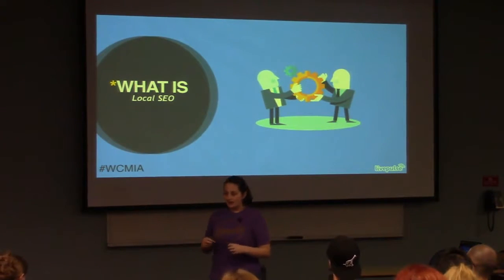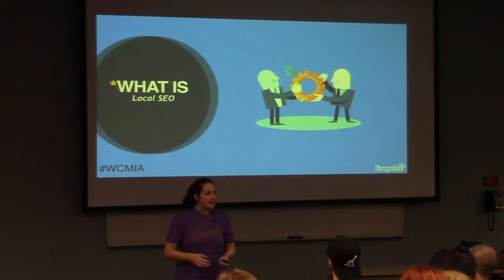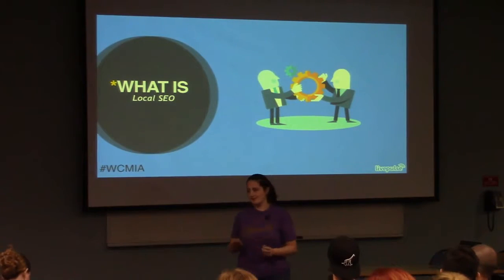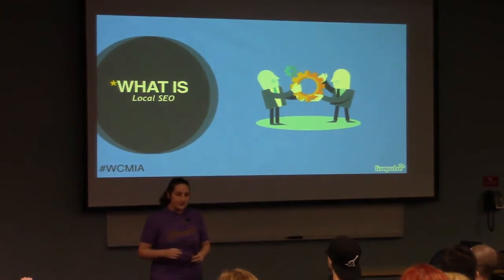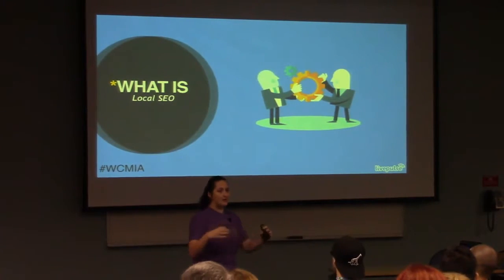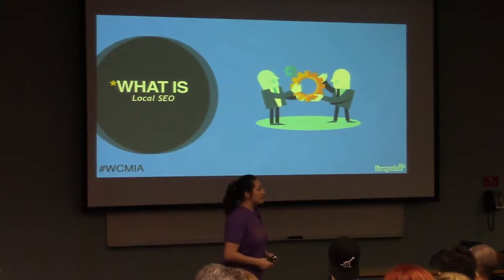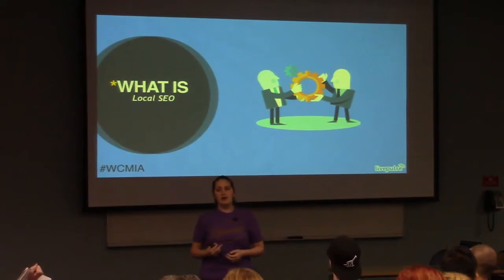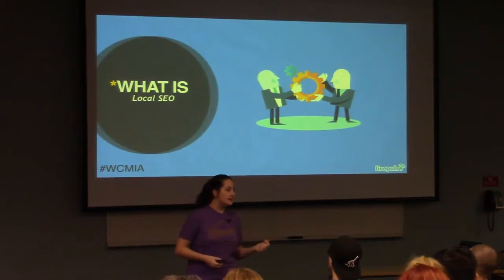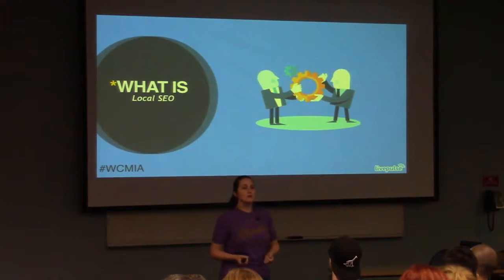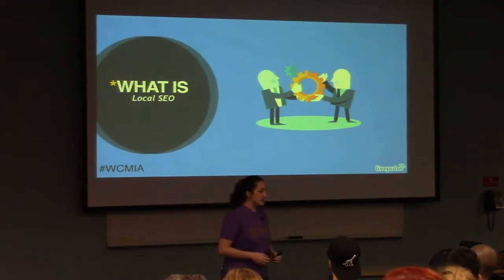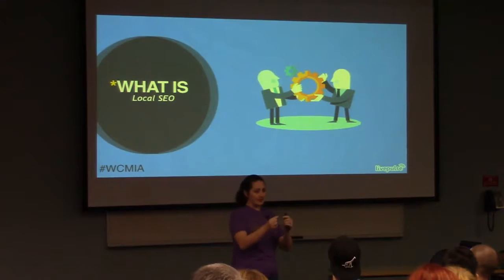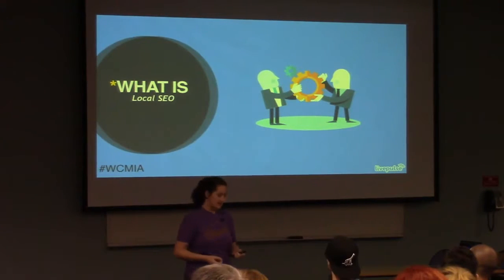When people are searching on a desktop, they'll often type in 'Pizza Orlando' — I'm from Orlando, so I'll use Orlando examples. How do we get found for 'Pizza in Orlando'? You'll also find that people are searching more from mobile devices. Over 50% of searches are now locally based, meaning they're either typing in their location on a desktop browser or using their phone to search.